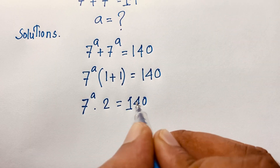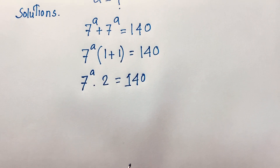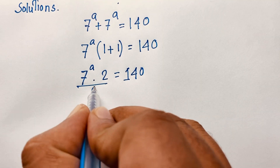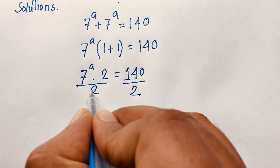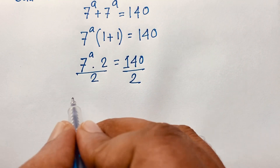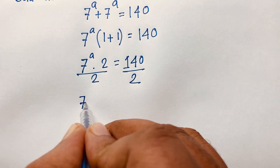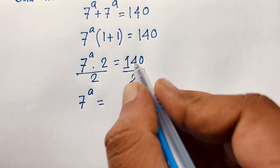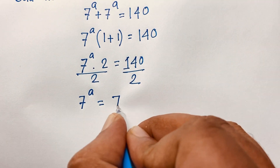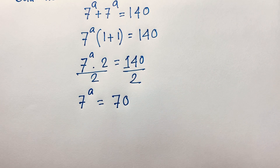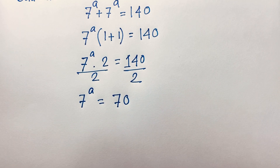Now, if I divide both sides by 2, the 2 cancels. So we will find out here 7 to the power a is equal to 140 divided by 2, it will be 70. We find out that 7 to the power a is equal to 70.